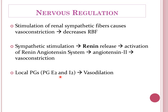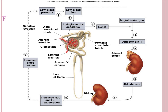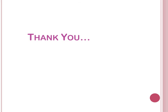Local prostaglandins such as prostaglandin E2 and I2 are also secreted during sympathetic stimulation and have the opposite effect — vasodilatation. So during exercise, sympathetic stimulation decreases renal blood flow, but the simultaneous release of local prostaglandins causes vasodilatation to maintain some blood flow. Except under extreme sympathetic stimulation, vasoconstriction is nullified by vasodilatation. This is a short but important topic — renal circulation and its regulation. Thank you very much.